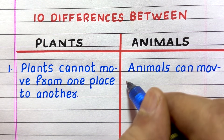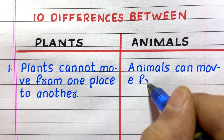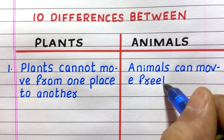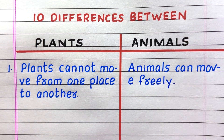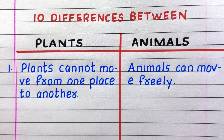First difference: plants cannot move from one place to another, while animals can move freely.